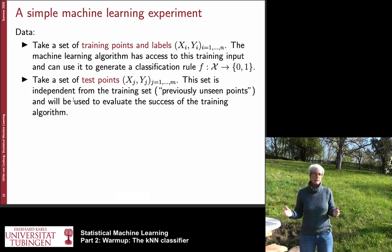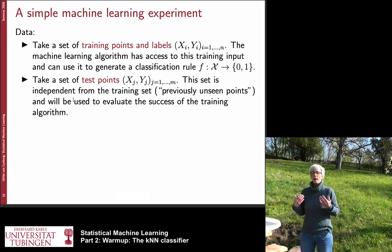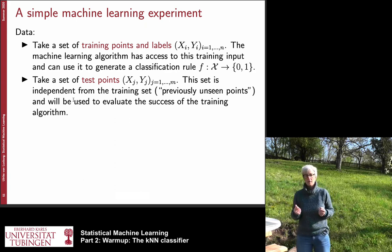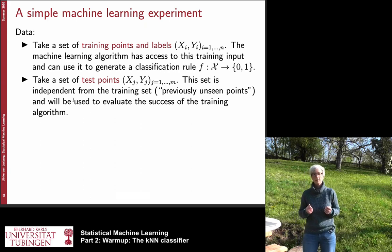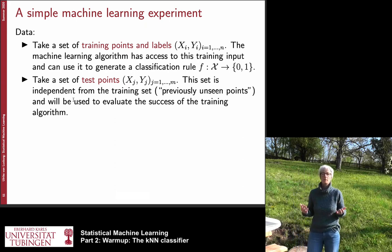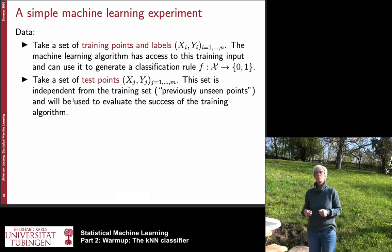These are abstract points that we give to the machine learning algorithm. The algorithm is supposed to train a function f that takes points from the input space, called curly X, and maps them to some output — in this case either 0 or 1. We take a very simple experiment: a binary classification task where the output is just 0 or 1.